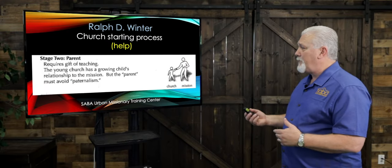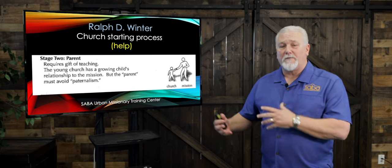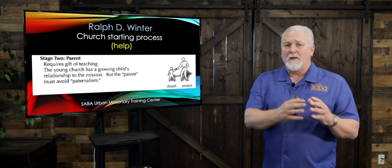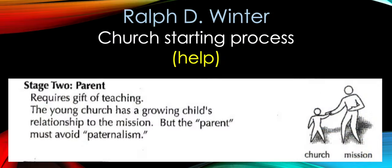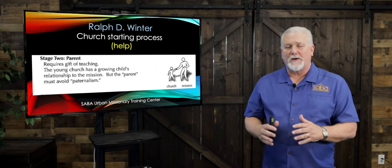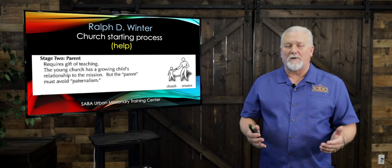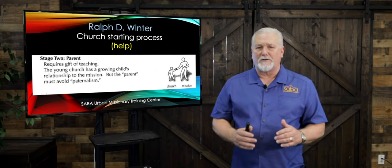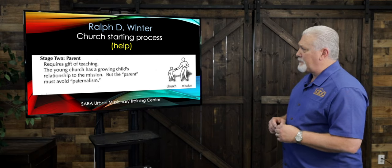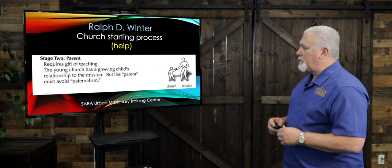In step two, the Help stage, the missionary is transitioning from no believers to some believers, discipling them to be the leaders of the new congregation. One important note here is that the parent must avoid paternalism. In some cases, what stunts the growth of the new church start is that the missionary does not allow local leaders to take leadership — he prefers to keep doing the ministry himself rather than transferring leadership. Ralph Winter calls this the Parent step.